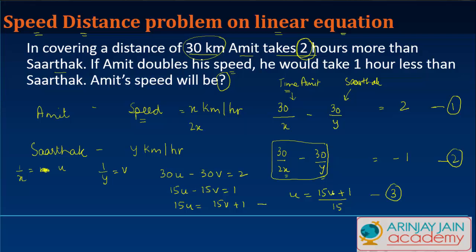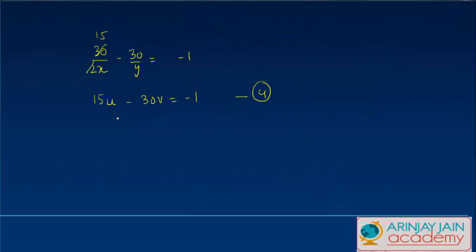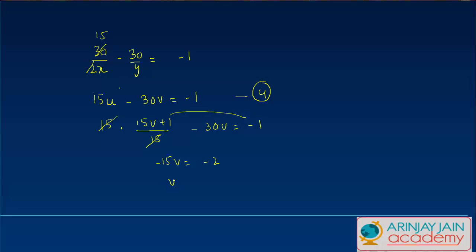From Equation 3, u equals (15v plus 1) divided by 15. Substituting into Equation 4: (15v plus 1)/15 times 15, minus 30v equals minus 1. This simplifies to 15v plus 1 minus 30v equals minus 1, giving minus 15v equals minus 2, so v equals 2/15.